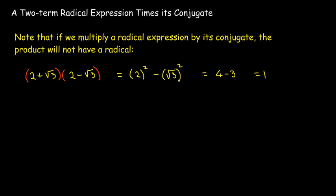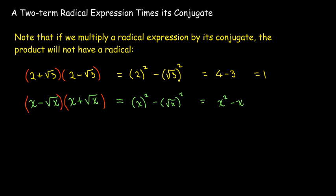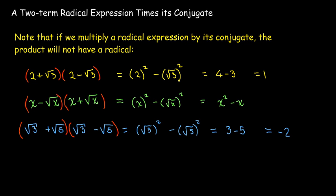Let's look at a few examples. Here I have x minus radical x times its conjugate, so I'll get x squared minus radical x squared, and radical x squared is just x. Here I have both terms with a radical, but when I multiply by its conjugate, I square both terms and take their difference. Radical 3 squared is just 3, radical 5 squared is just 5, and 3 minus 5 gives negative 2.